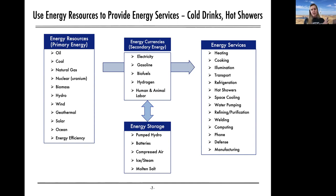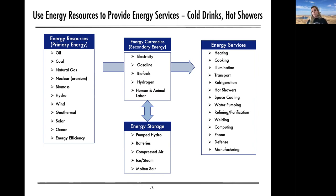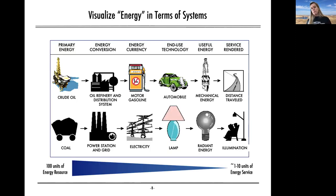That often requires secondary energy — energy currencies — because energy resources aren't always in a form that can directly give us the energy service we want. We have to take it through secondary energy like electricity or gasoline to get that service. There's also energy storage — can we store energy to make it even easier to have available? Energy storage often refers to electricity storage, like pumped hydro or batteries, but broadly even a pile of coal or wood could be considered energy storage.